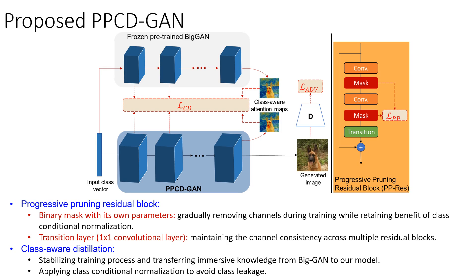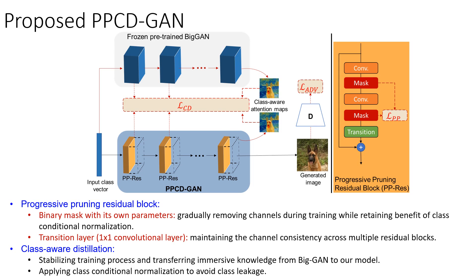Here we show our proposed BPCD-GAN, which follows a teacher-student framework. We use BigGAN as our teacher model and self-attention GAN as the student model. In detail, we replace the residual block in self-attention GAN with our progressive learning residual block. We introduce a binary mask with its own parameters, enabling removal of network parameters during training time, resulting in self-removal after training. In consideration of channel consistency across multiple residual blocks, we employ one-by-one convolutional layers and transition layers. We also introduce class-aware distillation to stabilize the training process, as we transfer immense knowledge from BigGAN to our model.